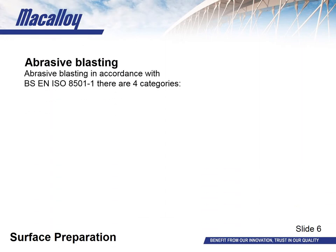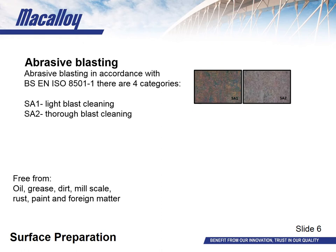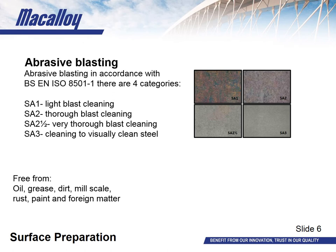Prior to any coating, the steel must be cleaned and prepared. At McEloy, we generally opt for abrasive blasting, done externally in accordance with EN ISO 8501 Part 1, which outlines four categories. SA1 is a light blast clean — when viewed without magnification, the surface shall be free from visible oil, grease and dirt, and from poorly adhering millscale, rust, paint and foreign matter. SA2 is a thorough blast clean — the surface shall be free from all shown deleterious matter, and any residual contamination shall be firmly adhering. SA2.5 is a very thorough blast clean — any remaining traces of contamination shall show only as stains in the form of spots or stripes. SA3 is cleaning to visually clean steel — the surface shall be free from all deleterious matter and shall have a uniform metallic colour.